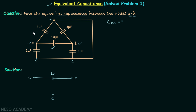Between A and C we have a 3µF capacitor and between B and C we have another 3µF capacitor. So let us connect one capacitor between A and C having the value 3µF, and connect one more 3µF capacitor between B and C. In this way we are done with these two capacitors.